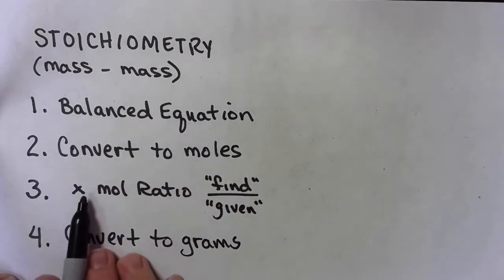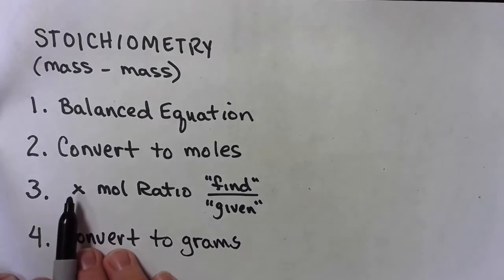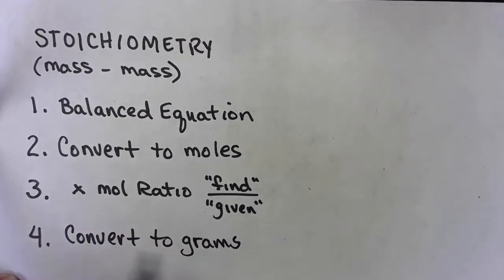That's why we have to have the balanced equation is so you can do step three. And if you don't do step three, you're not doing stoichiometry. And finally, if we're doing mass to mass, we're going to have to convert what we get back to grams. I like to do it in one big long equation. And it works out pretty good for me.